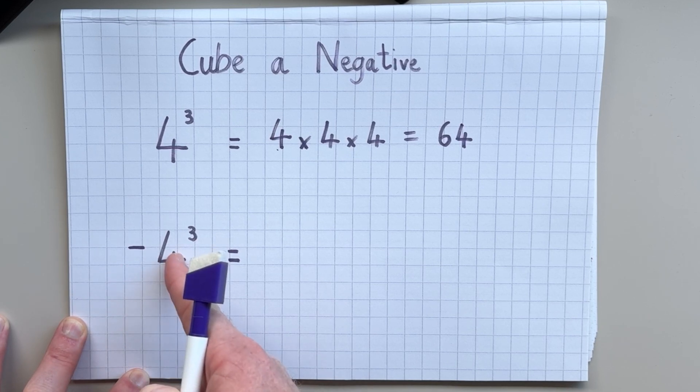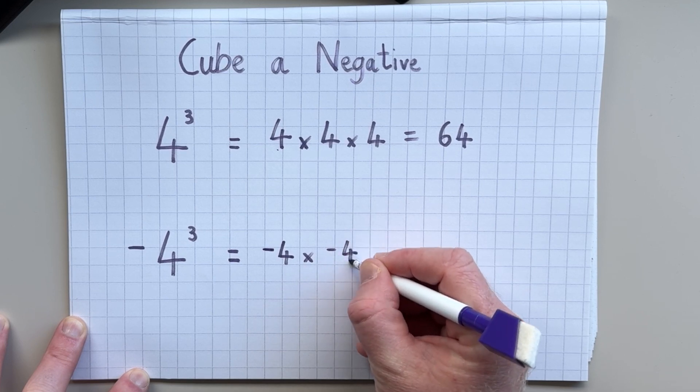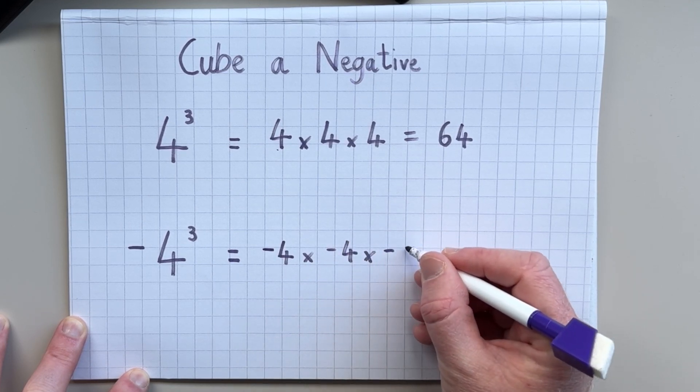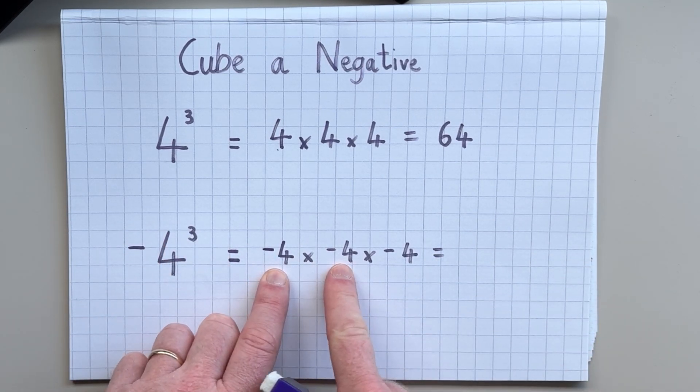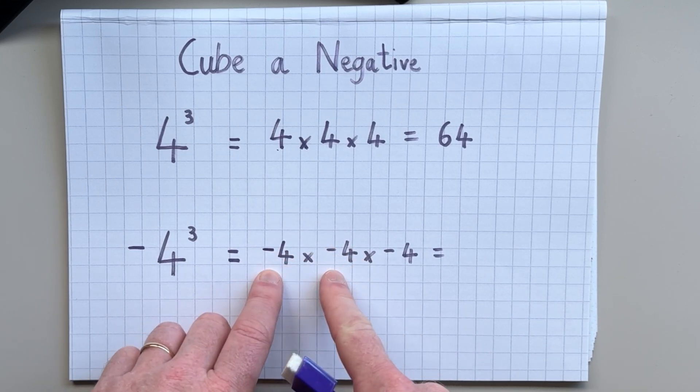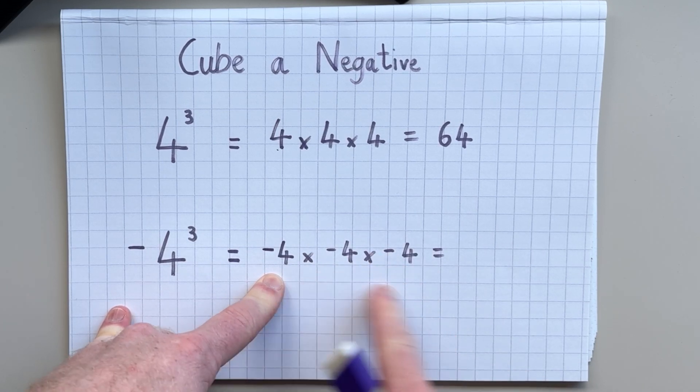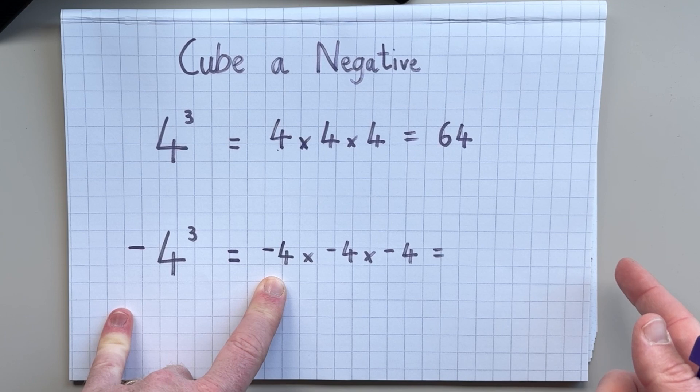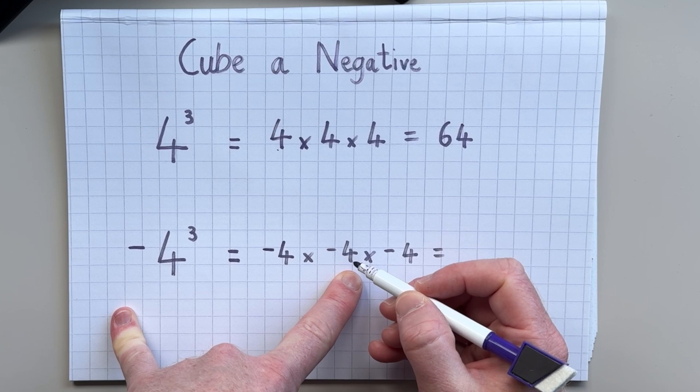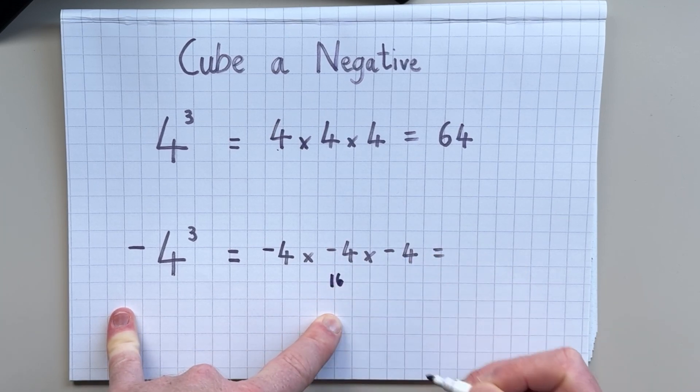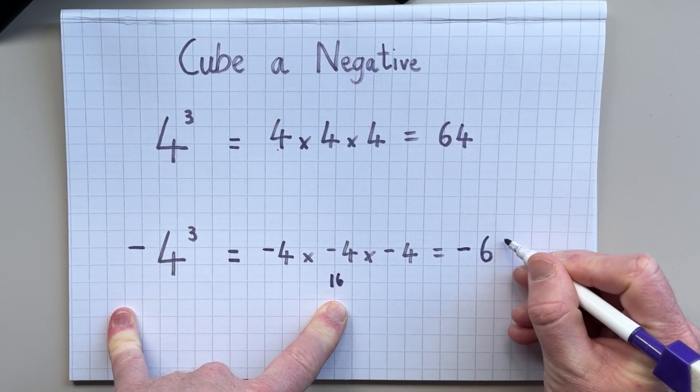What happens though when we have negative 4 cubed? So we've got negative 4 multiplied by negative 4 multiplied by negative 4. Now, when we have two negative numbers and we multiply them together, we end up with a positive number. But when we have three negative numbers multiplied together, we actually end up with a negative answer. So if we do negative 4 multiplied by negative 4, we actually have at that point 16. And then it's 16 multiplied by negative 4, which leaves us with negative 64.